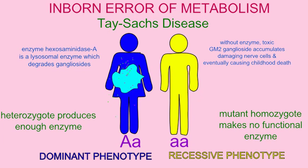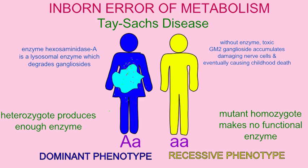Tay-Sachs disease is an example of an inborn error of metabolism. The gene for hexosaminidase A produces an enzyme which is a lysosomal enzyme that degrades a type of lipid in the brain known as gangliosides.